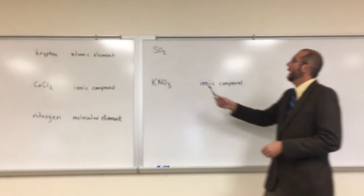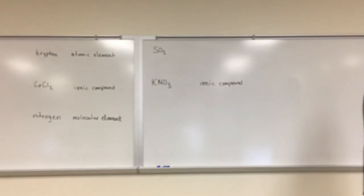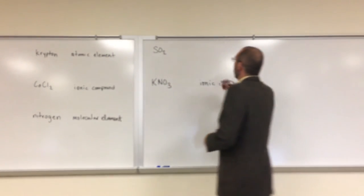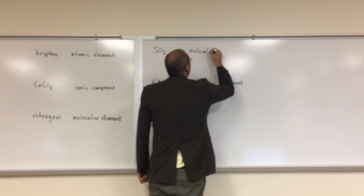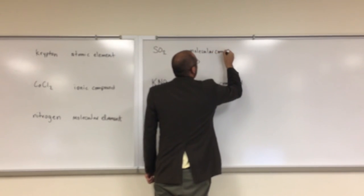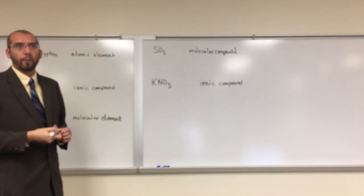So all we have left here is sulfur dioxide. Of course, it's not an ionic compound, so it must be a molecular compound. Okay? And you might say, wait, I thought that was a covalent compound. Covalent compounds are molecular compounds.